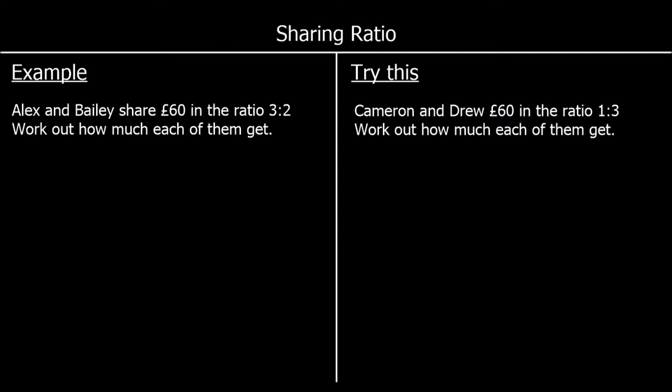This first example says Alex and Bailey share £60 in the ratio 3 to 2. So for every £3 Alex gets — it's Alex and Bailey in that order — Bailey's going to get £2. And as a total of £60, work out how much each of them get.